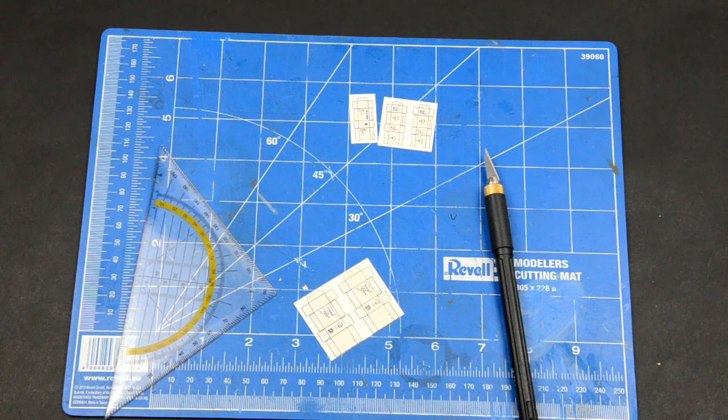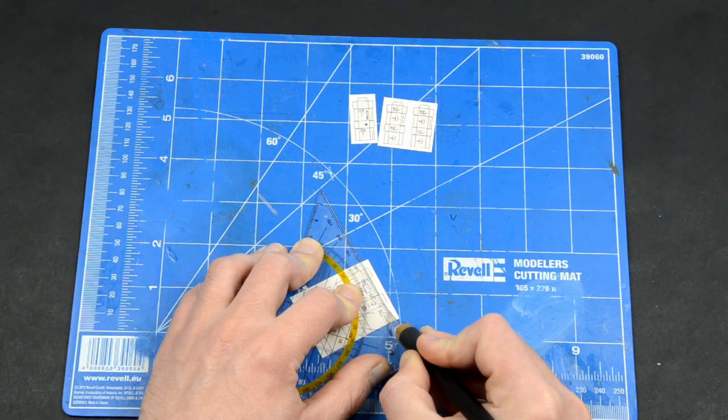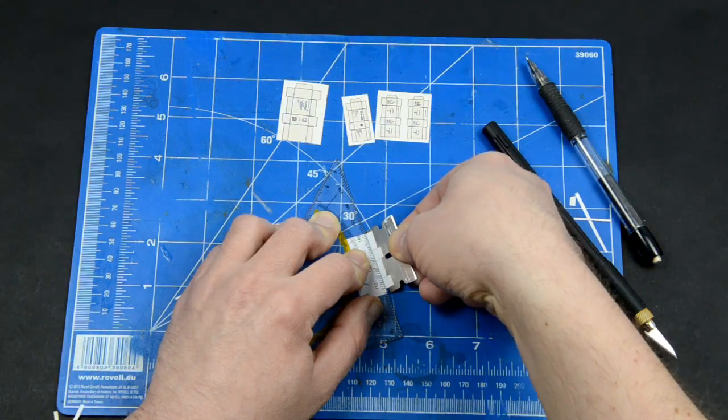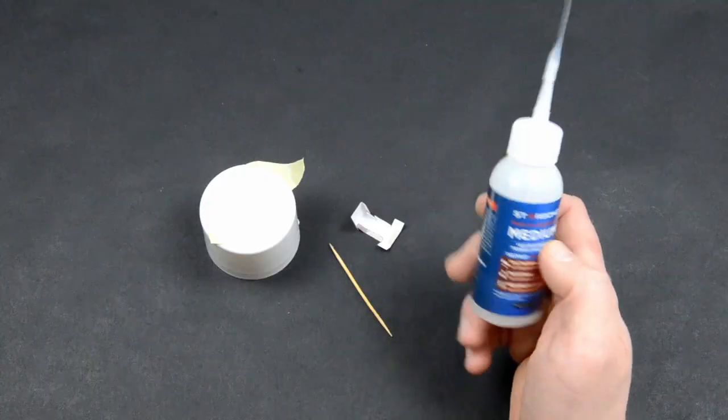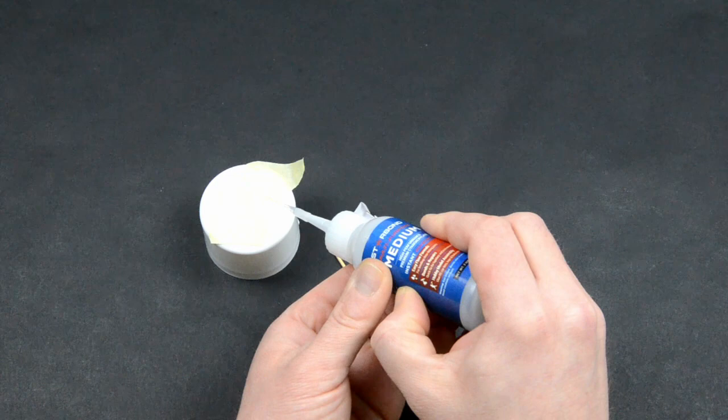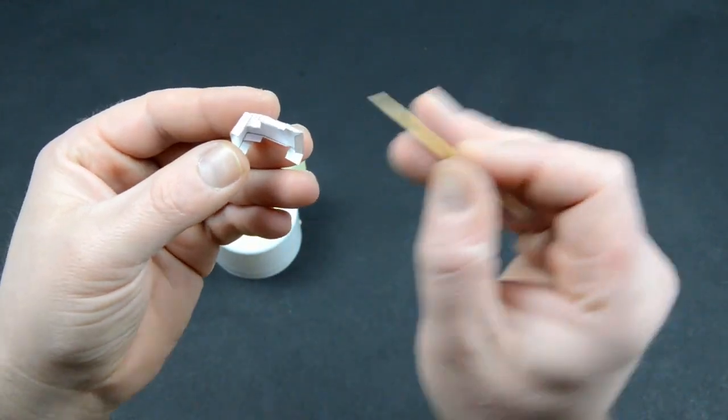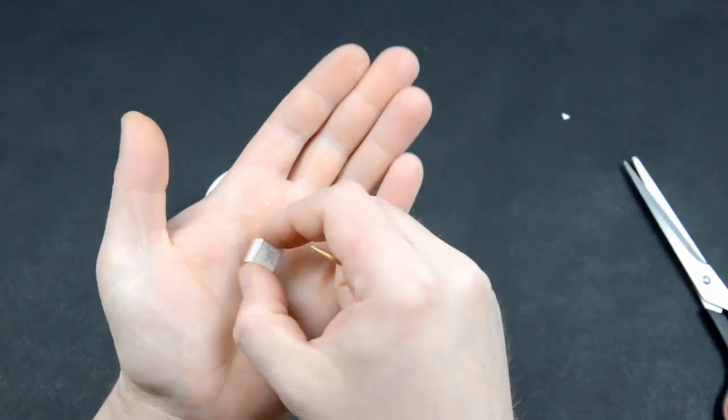I decided to add some ration boxes that I printed from the internet. We cut them out precisely with a sharp blade and a ruler. Then we have some bending to do, photo etch style, with a razor blade. I glue them together using medium CA, but not from the bottle. I was picking up small amounts from the masking tape. And here we have our box.